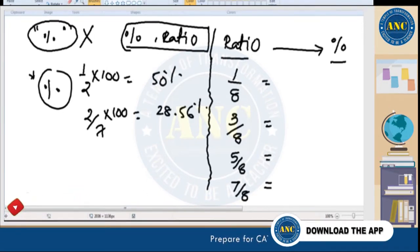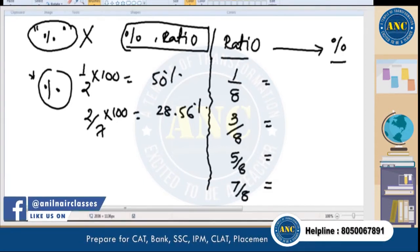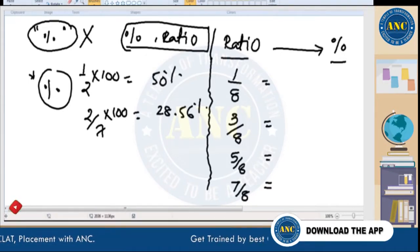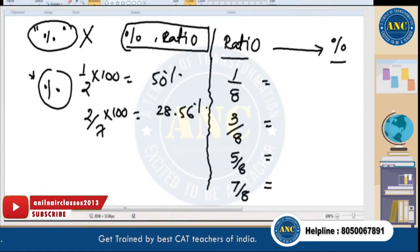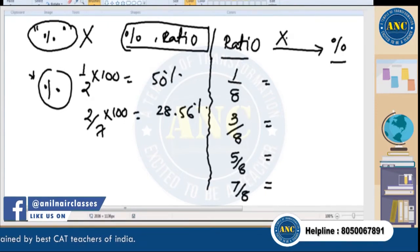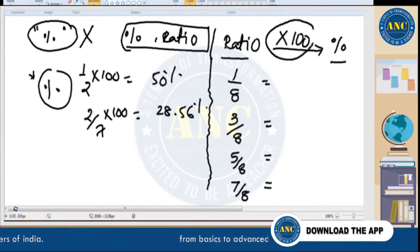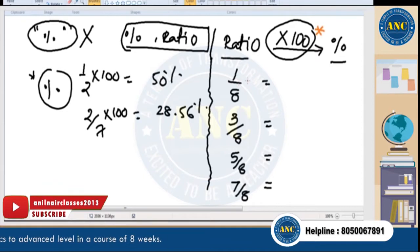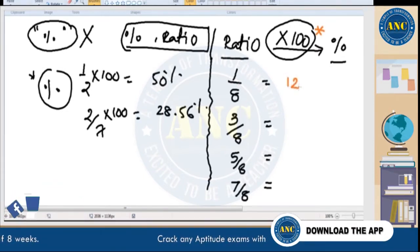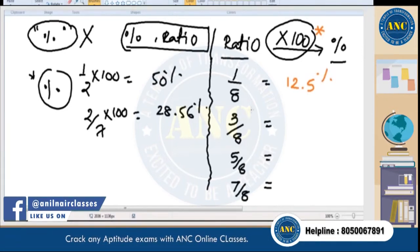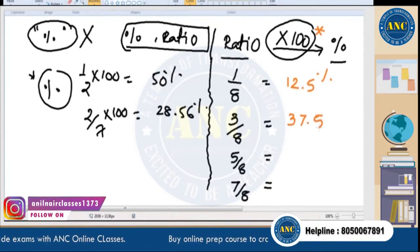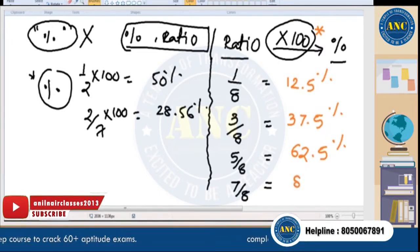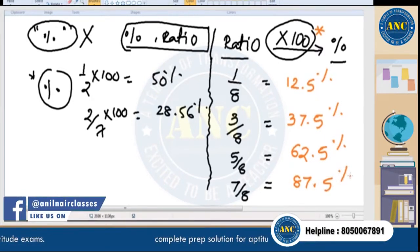If you've already attended the percentage class of ANC, these values will be very clear. Any ratio multiplied by 100 gives the percentage. So 1/8 × 100 = 12.5%, 3/8 = 37.5%, 5/8 = 62.5%, and 7/8 = 87.5%.